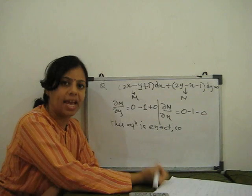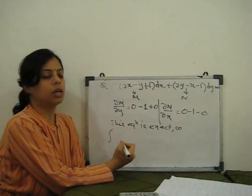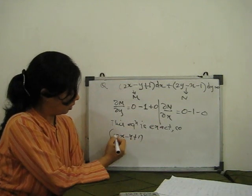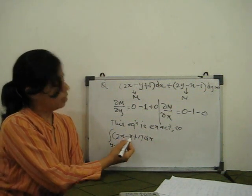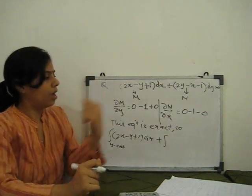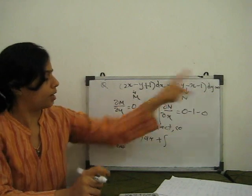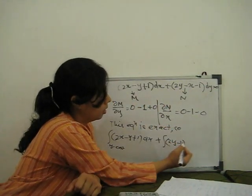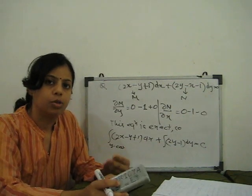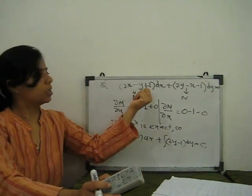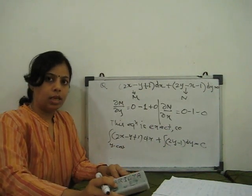So we apply the solution of the exact equation. We integrate M = (2x minus y plus 1) dx treating y as constant, plus the terms of N not containing x integrated with respect to y. From N = (2y minus x minus 1), we exclude the minus x term and take only (2y minus 1). So the solution is: integration of (2x minus y plus 1) dx (y constant) plus integration of (2y minus 1) dy equals c. Note: if the equation is exact the solution is much simpler than reducible to homogeneous.